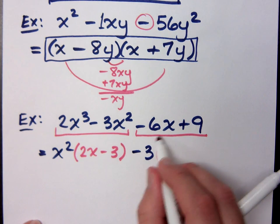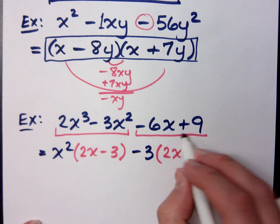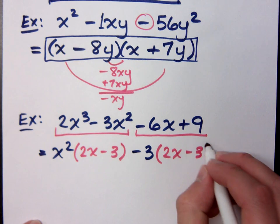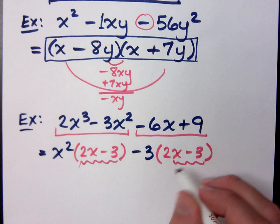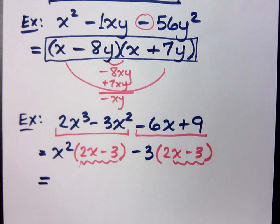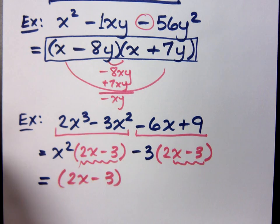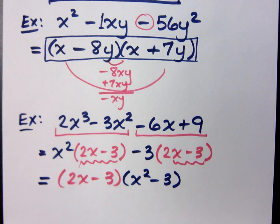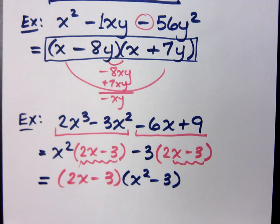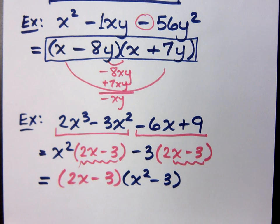If I take negative 6x divided by negative 3, what do you get? Positive 2x. What's positive 9 divided by negative 3? That's the first part of our answer: 2x minus 3. And what's the other factor? X squared minus 3. How do you know this answer is right? You can check it by multiplying it all out, and you should get back to the original.